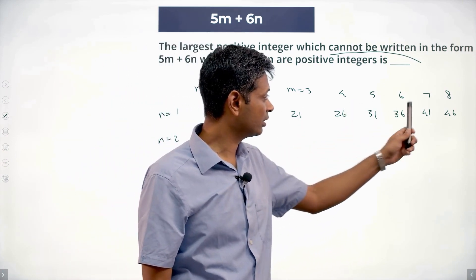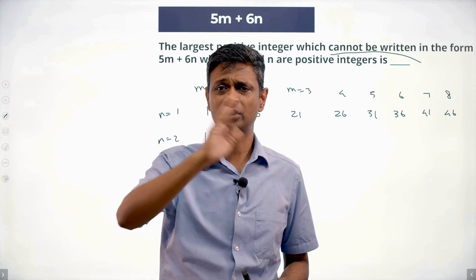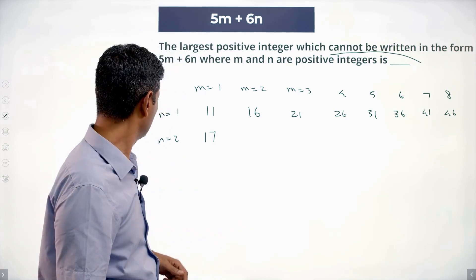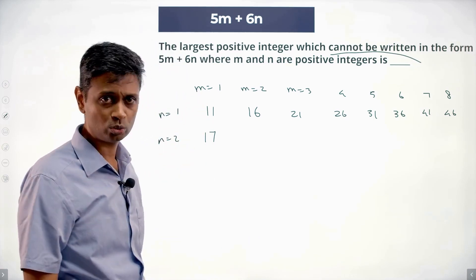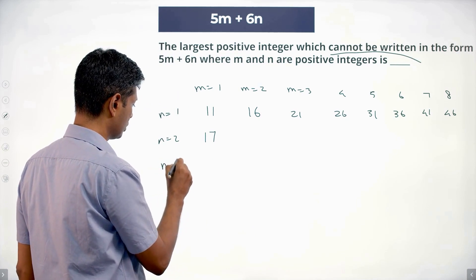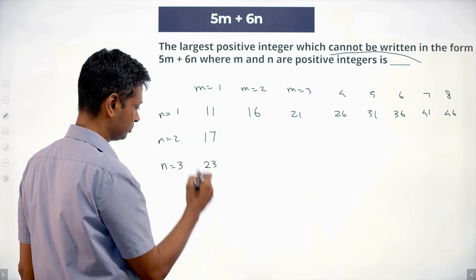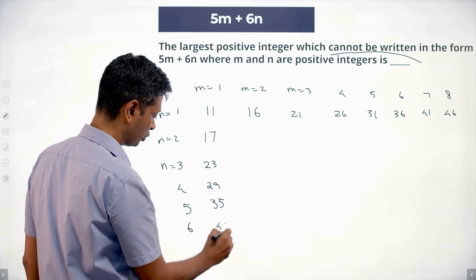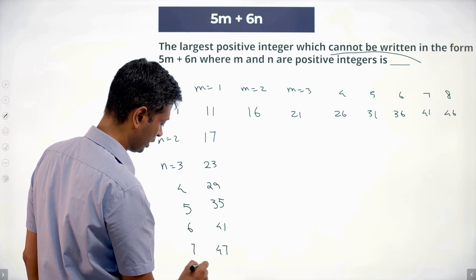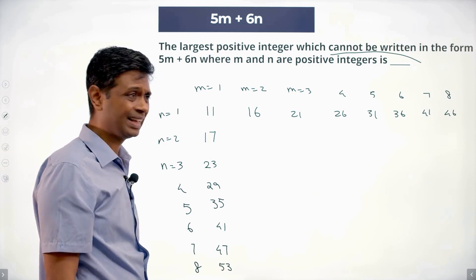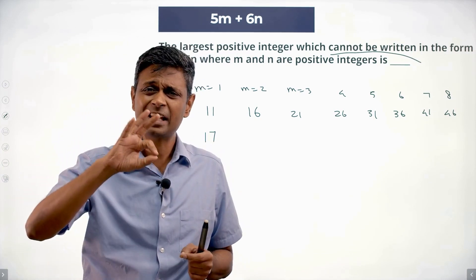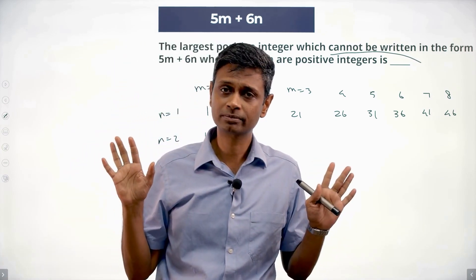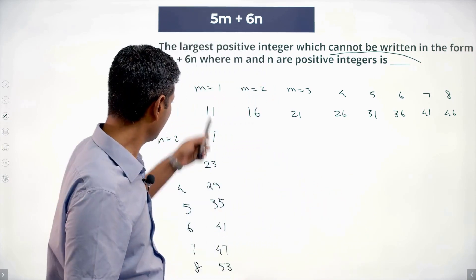Continuing: 16, 21, 26, 31, 36, 41, 46, 51, 56, 61, 66, 71, 76 — all writable. Similarly with n=2: 17, 23, 29, 35, 41, 47, 53, and so on. I've got one sum and keep adding 5 to generate everything. I can also keep adding 6 to generate everything — brilliant!